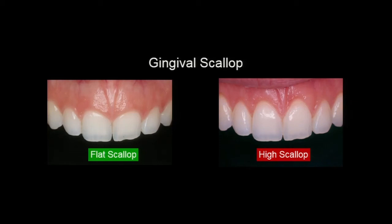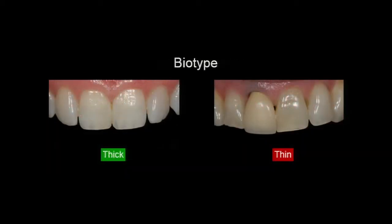This isn't quite as high a scallop as I would like to illustrate here, but when we have high tissue with a lot of scallop, this is better when we're looking at losing teeth. Flat scallop is higher risk. Regarding tissue thickness: thin tissue is more likely to recede, while thick tissue is better — low risk.